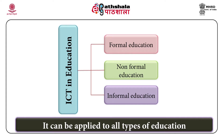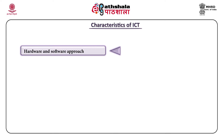Let us study about characteristics of ICT in education. First characteristic is hardware and software approach. ICT in education is any hardware and software technology that contributes in educational information processing. In the context of the present era, ICT mainly comprises hardware like PC, keyboard, projector, CD, etc., and also softwares like various programs, packages and e-learning strategies.